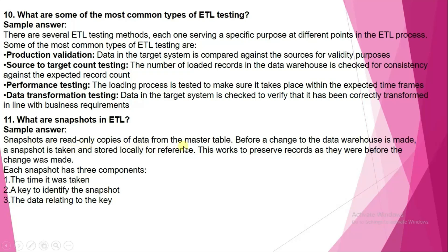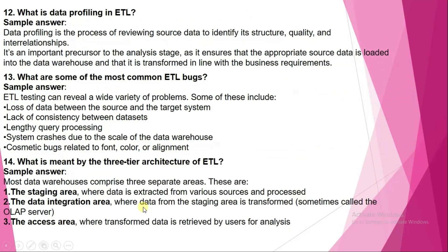What are snapshots in ETL? Snapshots are read-only copies of data from a master table. Before a change to the data warehouse is made, a snapshot is taken and stored locally for reference, preserving records as they were before the change. Each snapshot in ETL has three components: the time it was taken, a key to identify the snapshot, and the data relating to the key.